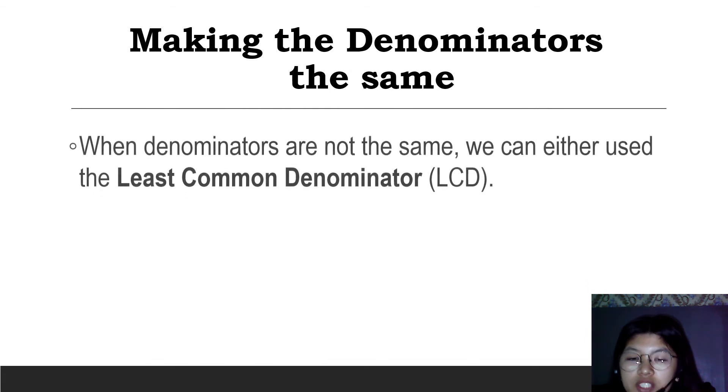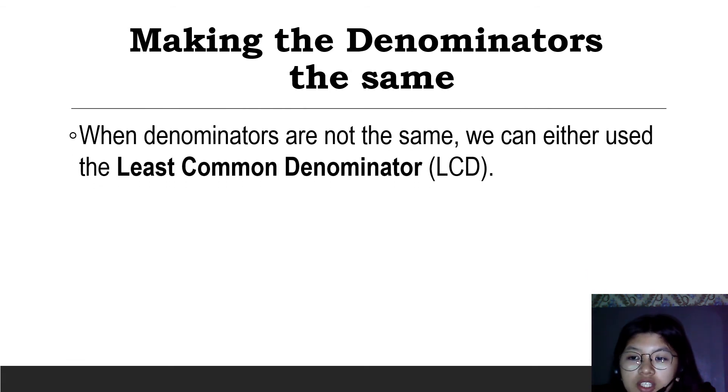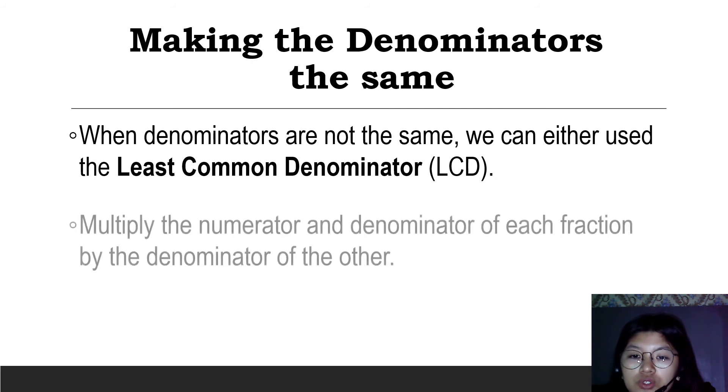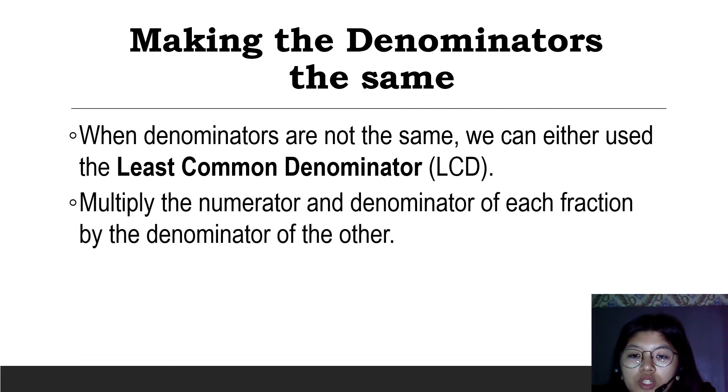Making the denominators the same. When denominators are not the same, we can either use the least common denominator, like when adding fractions with different denominators. Next, multiply the numerator and denominator of each fraction by the denominator of the other. For example, we have 1 third plus 2 fifth. To get our LCD: